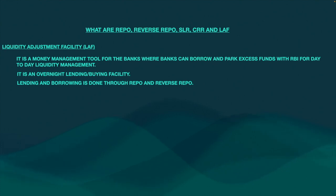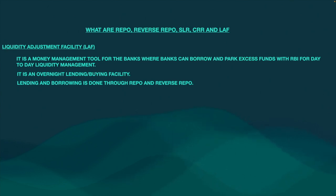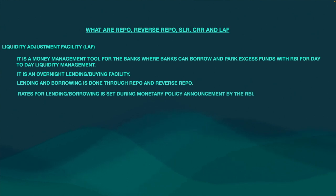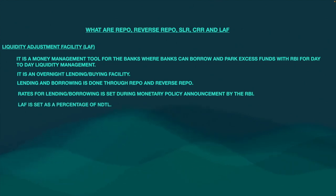Liquidity Adjustment Facility means, suppose I am a bank with 1 lakh rupees. I want to keep 1 lakh rupees for one day with the RBI — I will earn interest at the reverse repo rate. If I take 1 lakh rupees from the RBI for one night, I have to pay interest equal to the repo rate. These rates for lending and borrowing are set during the monetary policy announcement, which is done every quarter. LAF is also set as a percentage of net demand and time liability.